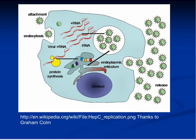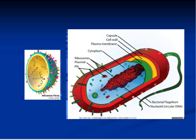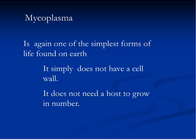They take over several functions and start growing in number. Once they are enough in numbers, they simply damage the cell membrane and move out, leaving a dead cell behind. They then find other host cells to do the same. As described before, viruses are covered by proteins, while bacteria have a cell wall and a plasma membrane.